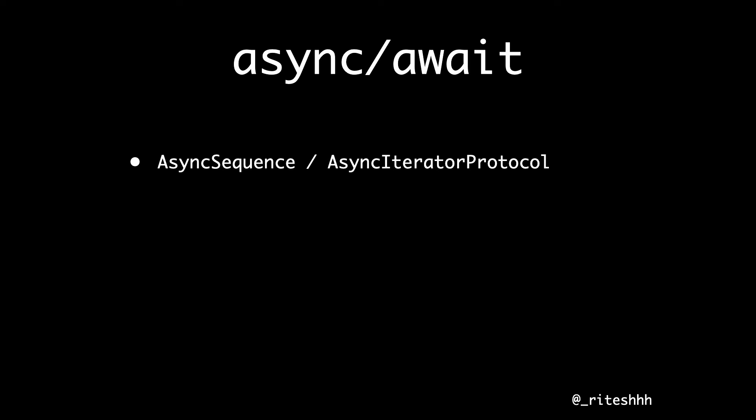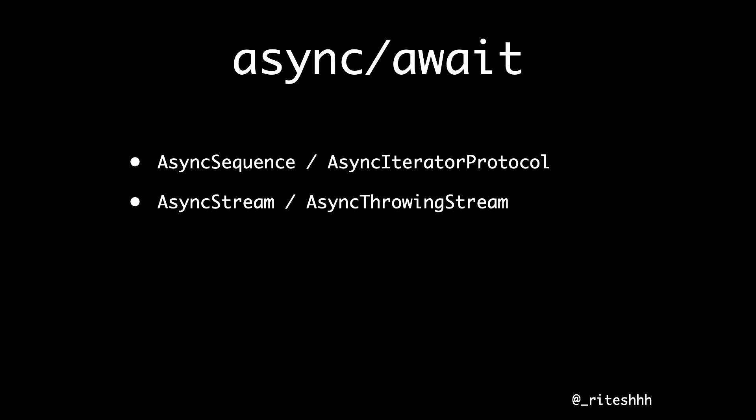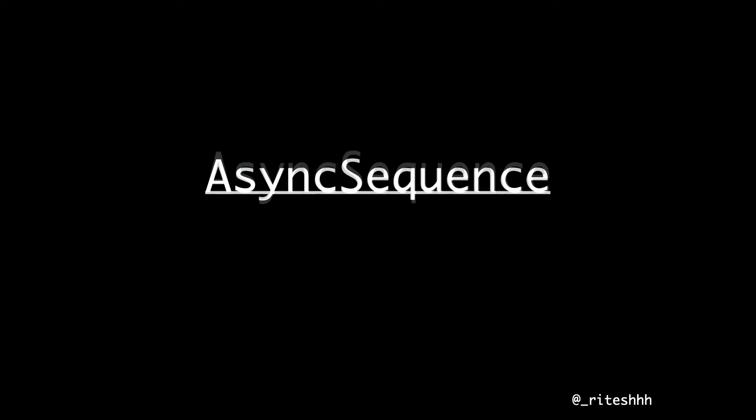Async/await solves the same problem with an API called AsyncSequence and a counterpart protocol called AsyncIteratorProtocol. The iterator protocol allows you to get the next value, and AsyncSequence uses the iterator to get the next value. If AsyncSequence is too low-level, you can use AsyncStream — a higher-level API that conforms to AsyncSequence but helps you make streams very easily. It also has a throwing counterpart called AsyncThrowingStream. And if you're too lazy to make streams, you can rely on AsyncPublisher — a helper by Apple that converts any publisher to an AsyncSequence.